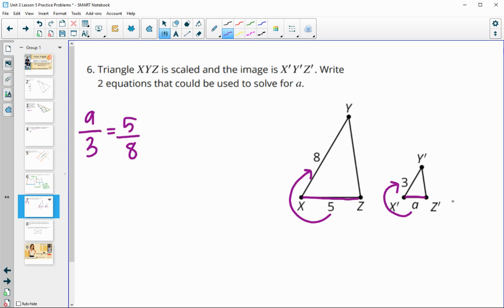We could also just compare similar sides in the figures. So I could start by comparing A to five, so I would do A divided by five. And then I would compare, go back. So I started in the image, so I started here, so I need to go back to there, so then I'm going to go with three and compare that to eight. And then you could cross multiply either of those to solve.